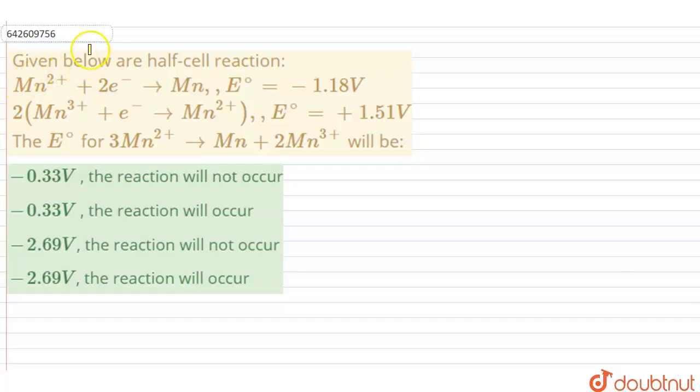Hello students, let's start the question. The question says that given below are half-cell reactions. Mn²⁺ plus 2e⁻ giving us Mn, E⁰ is equal to minus 1.18 volts.